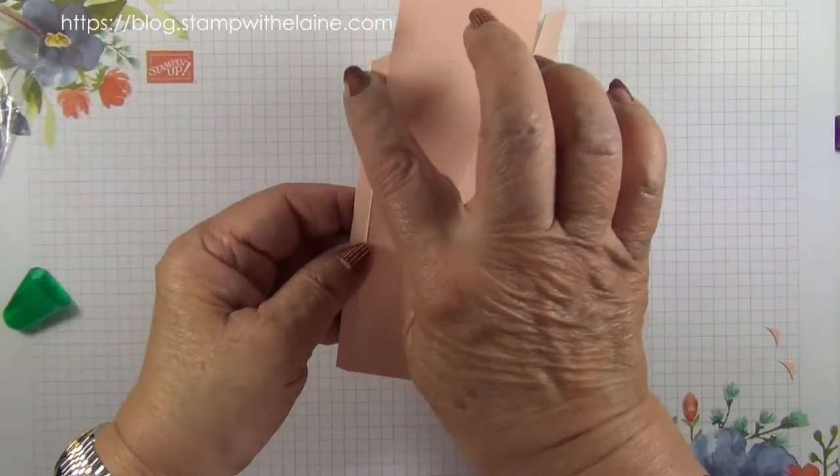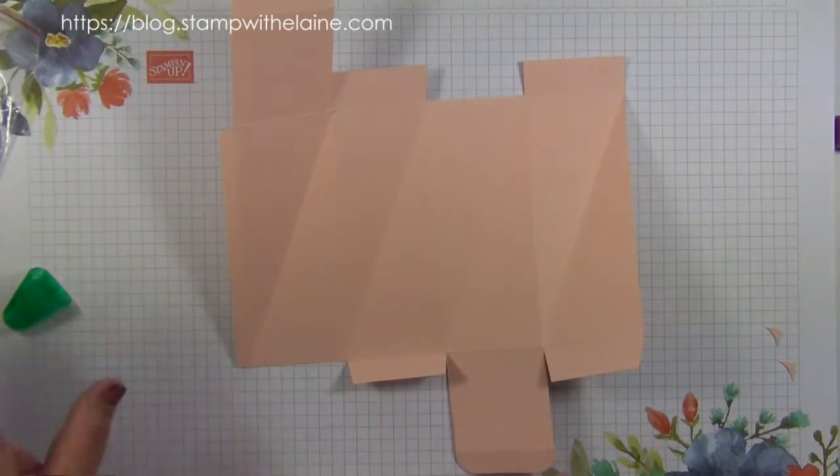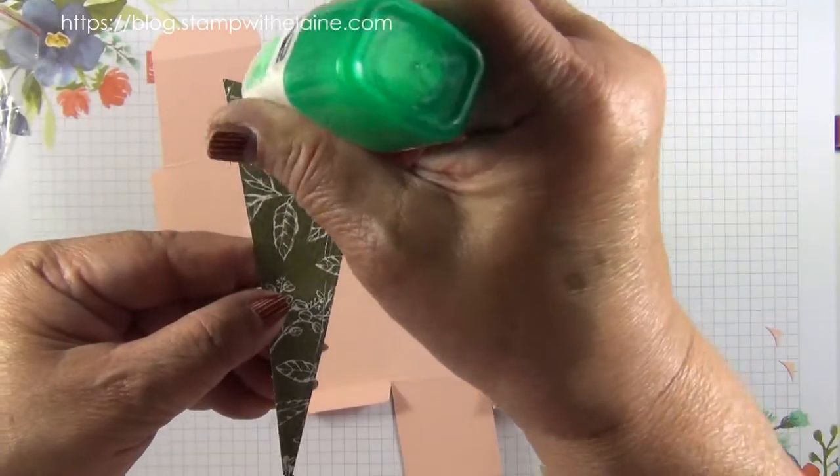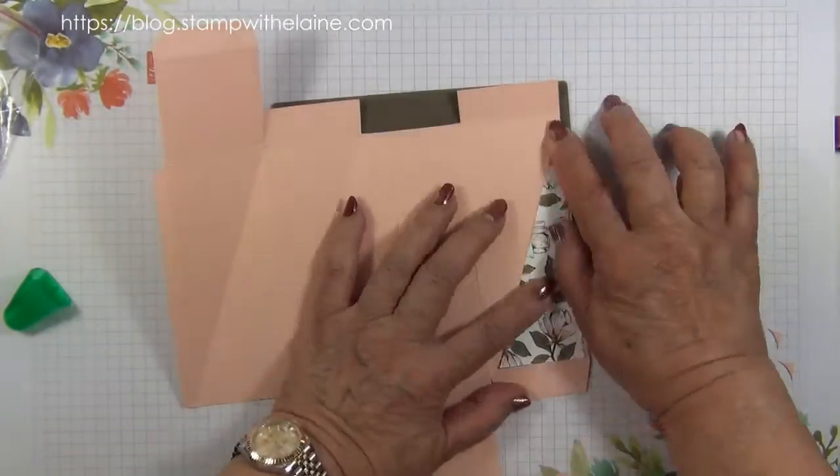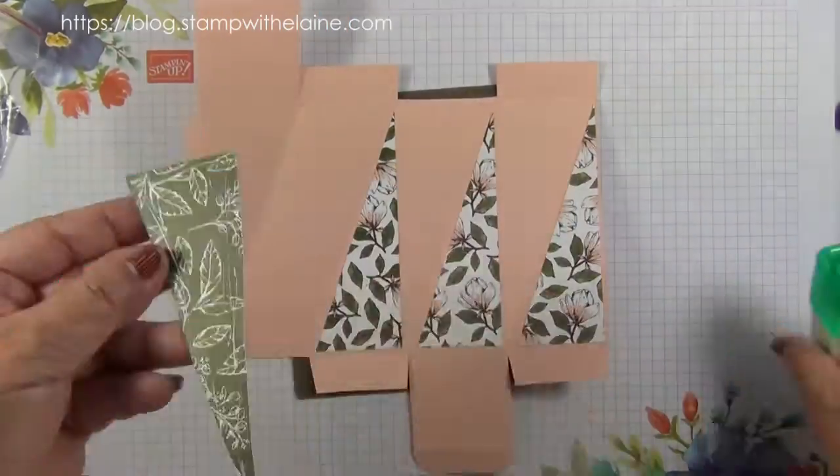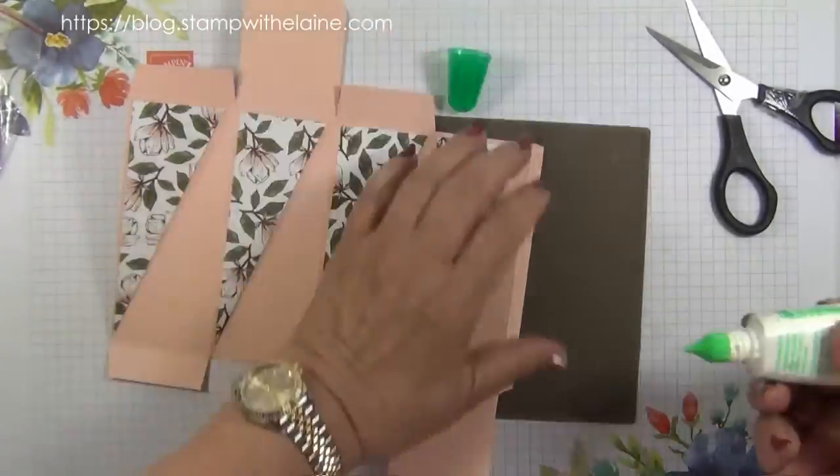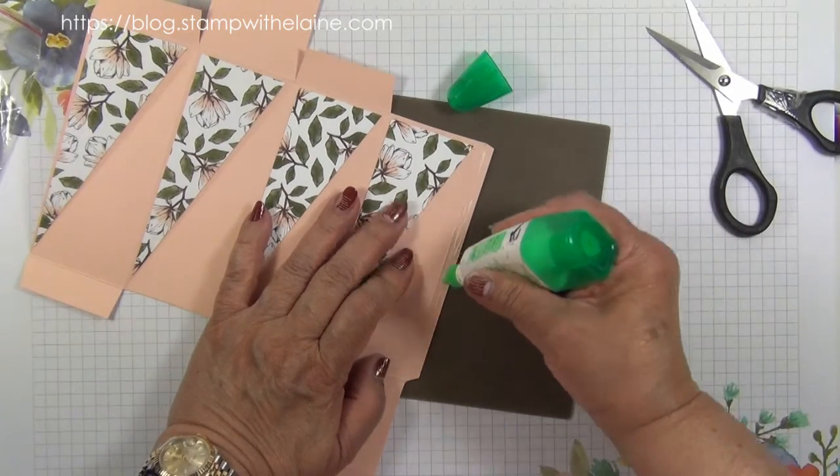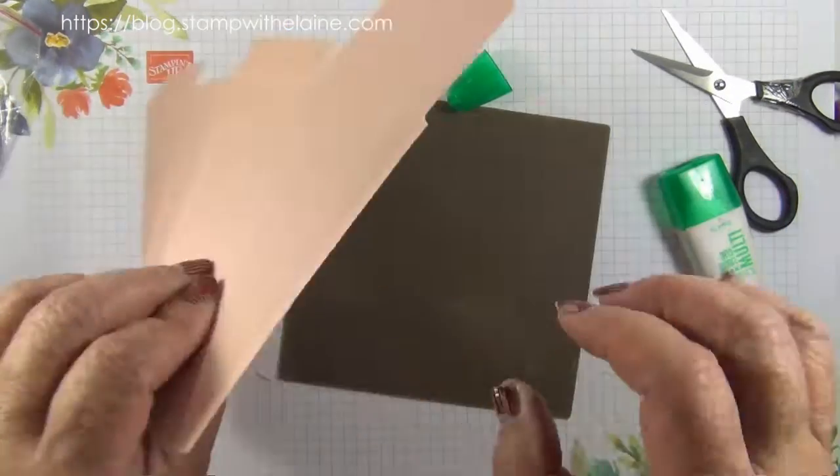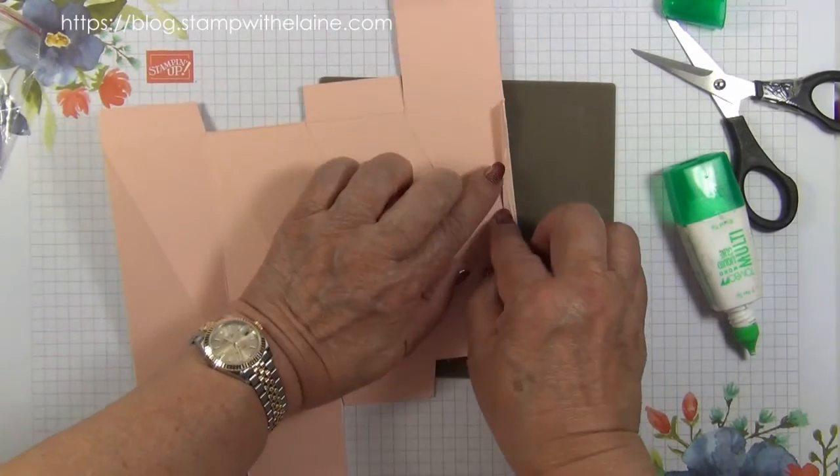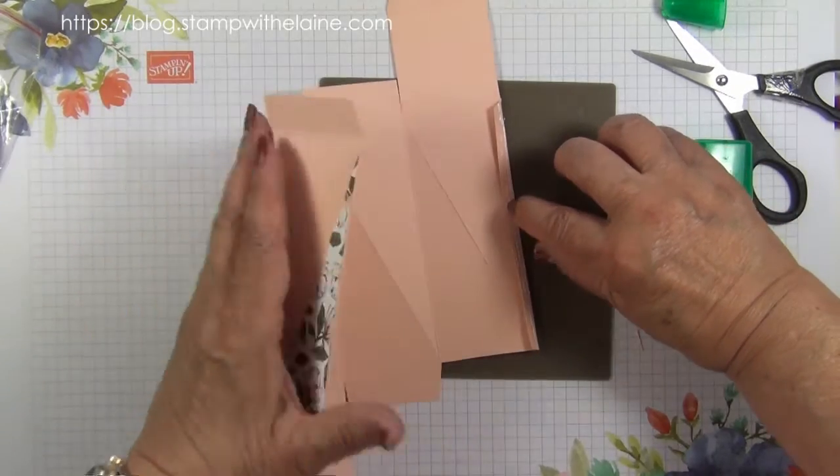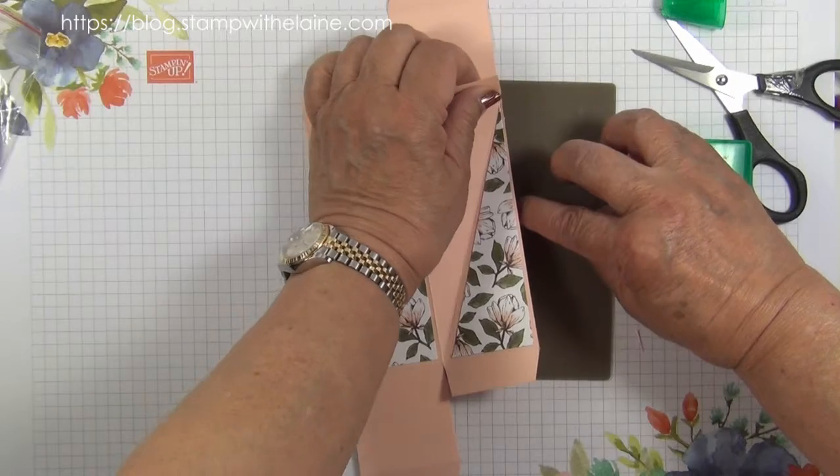Make sure you orient your quarter inch tab on the left, and then you can start gluing your designer series paper. I'll speed this up. Now you can use double-sided tape, but just for speed I'm going to use my Tombow glue. Fold this back, bring that bit over on top of this, and make sure the score lines meet up.